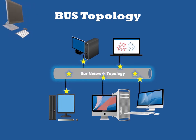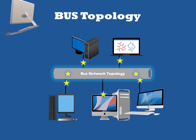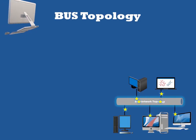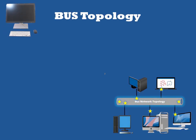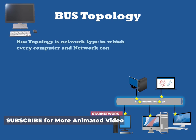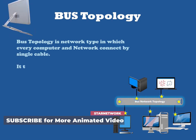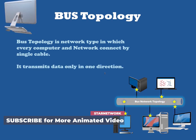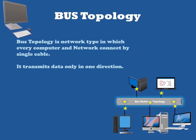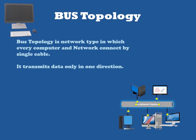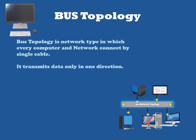Bus topology is a network category in which each computer and system device is connected to a single cable. It transmits data from one end to another in a single direction. There is no bi-directional feature in bus topology. Bus topologies are a good, cost-effective choice, especially for smaller networks.